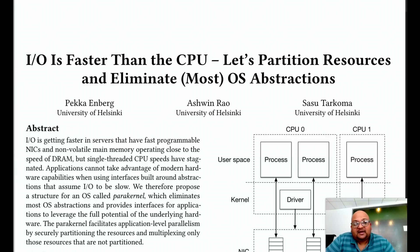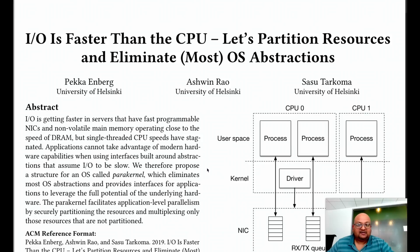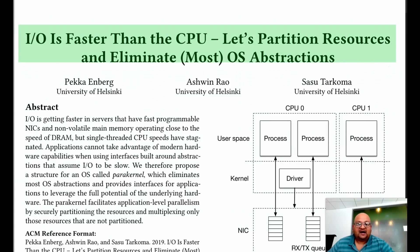All right, folks. So today, let's take a break from some of the classic CS papers from a few decades ago and jump right into a paper which is from this century. Indeed, it's from this year and this very month. The title of the paper is 'I/O is Faster than the CPU.'